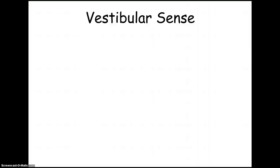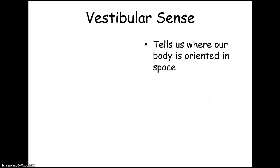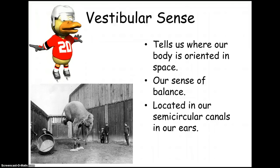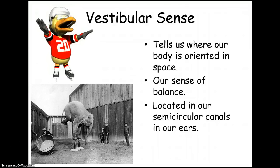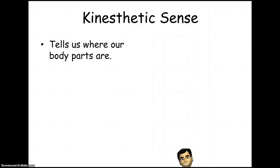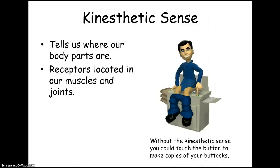There are two more senses you're probably aware of but never consciously think about — we consider these the body position senses, or the spatial senses: the vestibular sense and the kinesthetic sense. The vestibular sense tells us where our body is oriented in space — this is your sense of balance, located inside your ear in the semicircular canals. The kinesthetic sense tells us where our body parts are, with receptors located in our muscles and joints, unlike the touch receptors which are right at the surface of your skin.